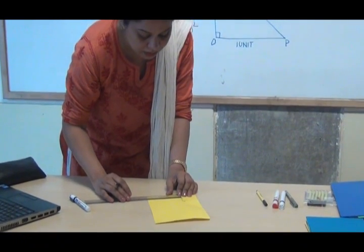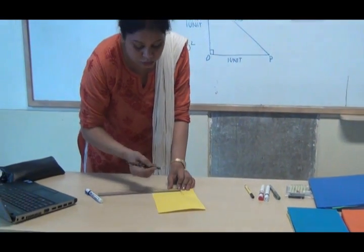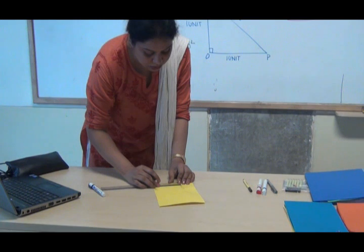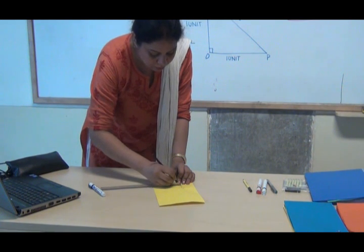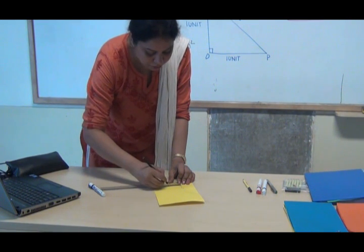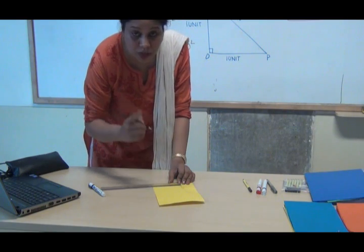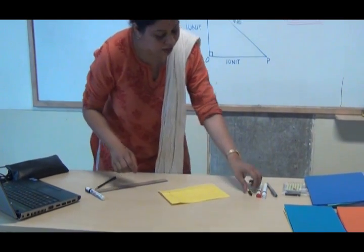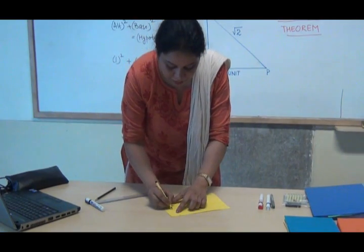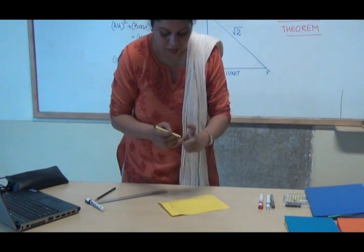This is the point P. And I am marking again one unit on this because that is what I want. On P, I am making again four centimeters which is my one unit. And I am marking this point as P1.